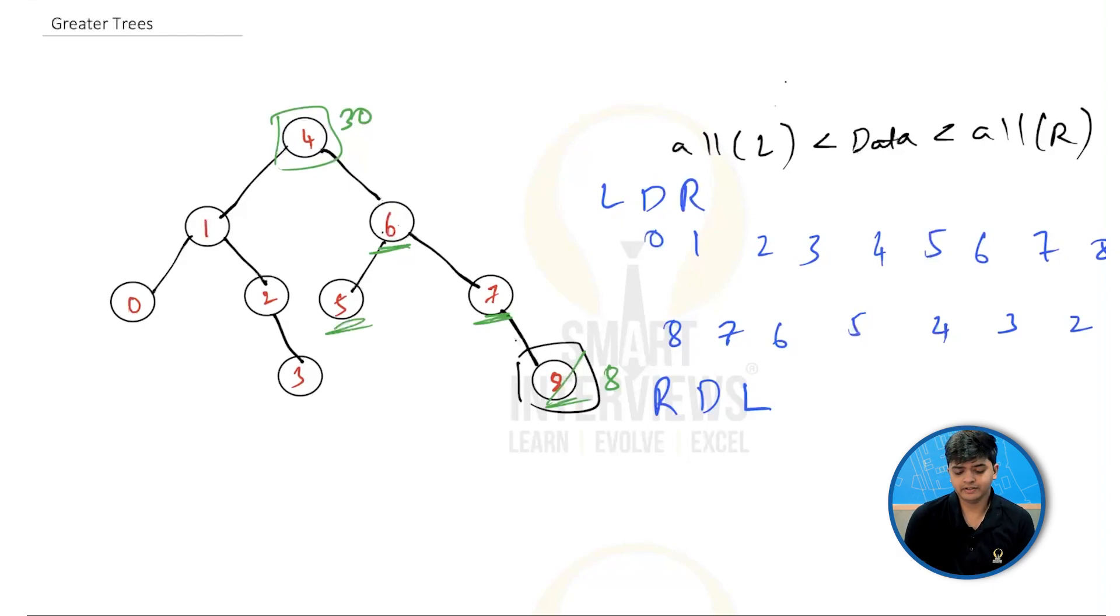Now, how do I use this reverse in-order to solve this problem? To do that, I'm going to take a sum variable, which will be initially 0. What I'm going to do is I'm going to traverse element by element on this reverse in-order, and add each element to the sum.